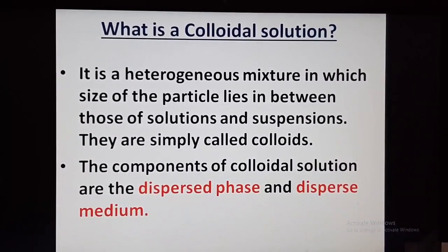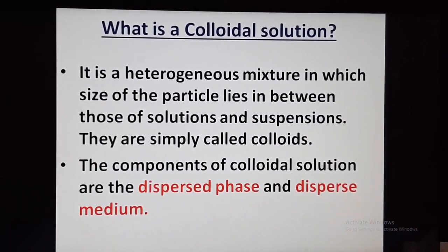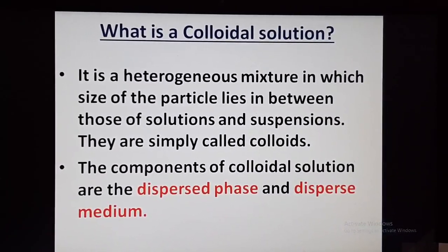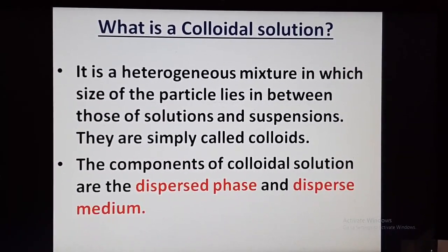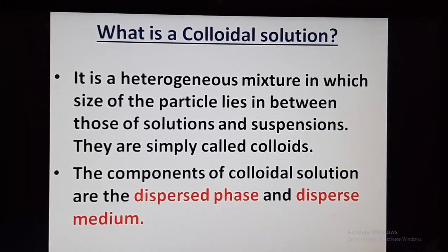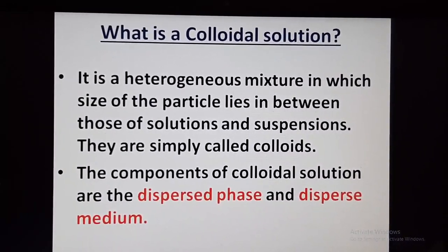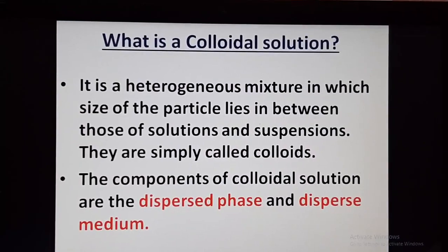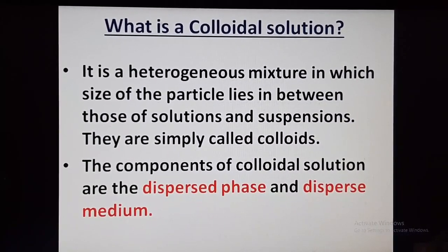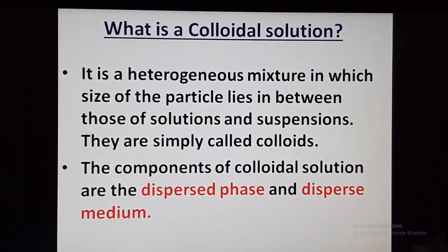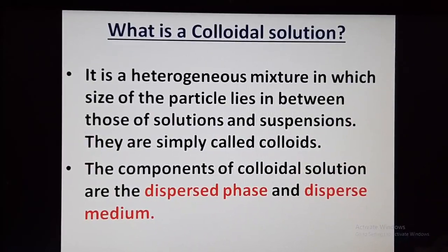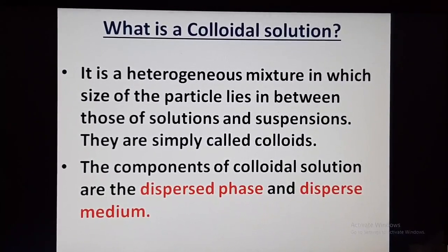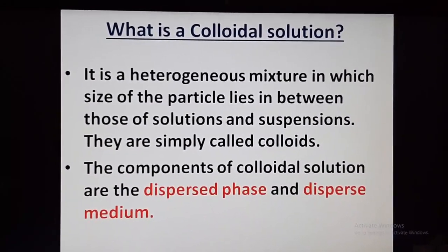The disperse phase can be solid, liquid, or gas. Similarly, the dispersion medium can also be solid, liquid, or gas. Depending upon the type of disperse phase and dispersion medium, various types of colloidal solutions are obtained. For example, in milk, the disperse phase is liquid and the dispersion medium is also liquid, so the type of colloid is an emulsion. Another example is a cloud, where the disperse phase is liquid and the dispersion medium is gas, so the type of colloid is an aerosol.